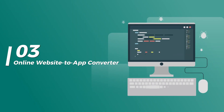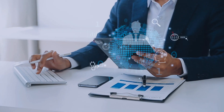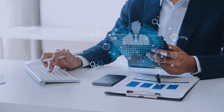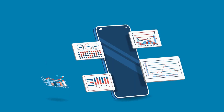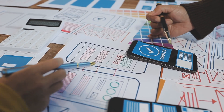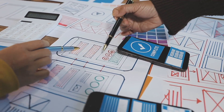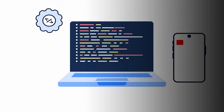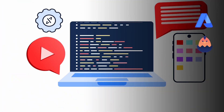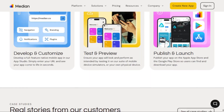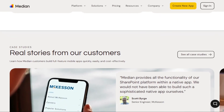Third, the Online Website-to-App Converter. If you want the fastest and easiest way to turn your website into an app, this is it. Online tools do all the work for you — just enter your website URL, customize your app, and download your APK or iOS source code. There are tons of online converters like AtMySite, Convertify, WebView Gold, and Median.co. But today we're using Median.co because it's free, simple, and doesn't require coding.